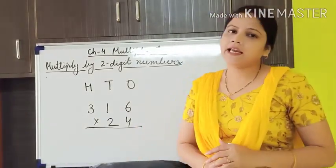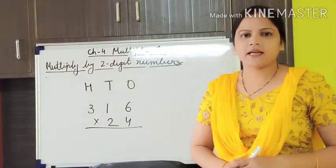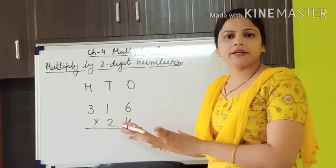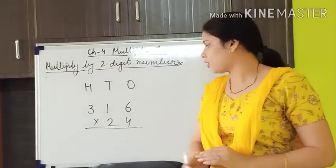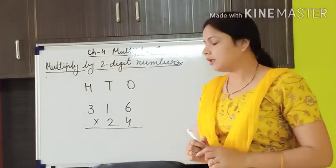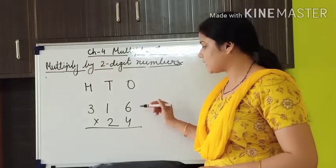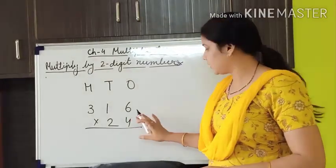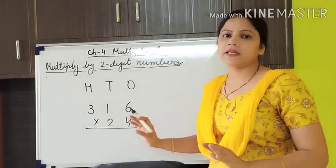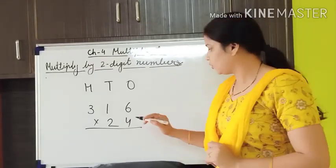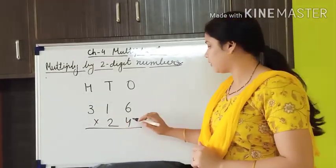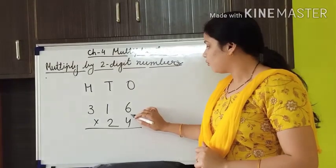Now let us take another example. I have already arranged the numbers according to their places. We have to start our multiplication from the number that is placed at the 1s position. Just forget about the second number right now.